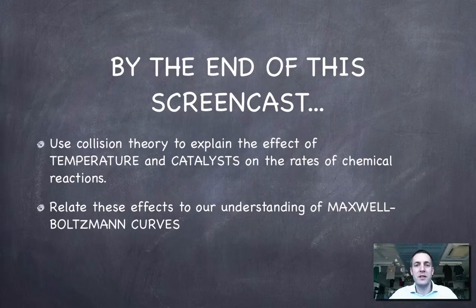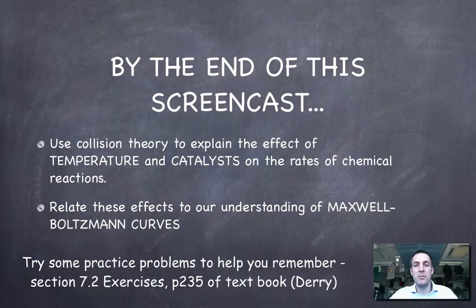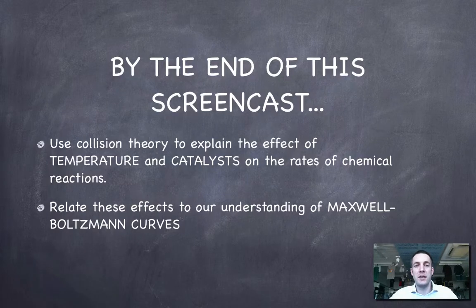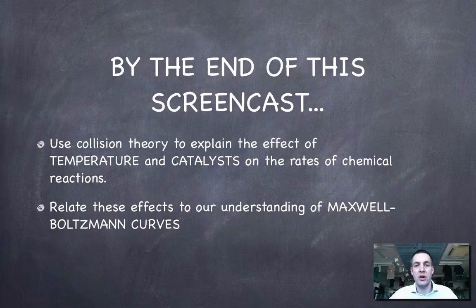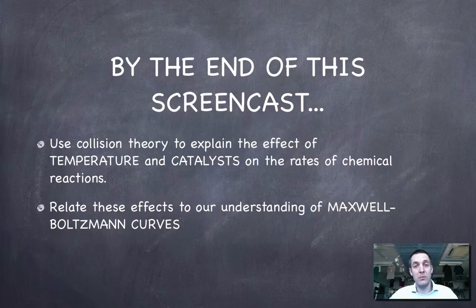That's it for standard level kinetics. Hopefully at this stage you're comfortable using collision theory to explain the effect of temperature and catalysts on the rates of chemical reactions — precisely, by talking about percentages of particles with enough energy to react. You can relate these percentages to Maxwell-Boltzmann curves: in an exam, you'd be able to sketch what happens and shade areas under curves to show the effect on reaction rate. This topic is a little more complex than the previous film on collision frequency, but as usual, feel free to post a comment on YouTube or come and see me if you have any questions.